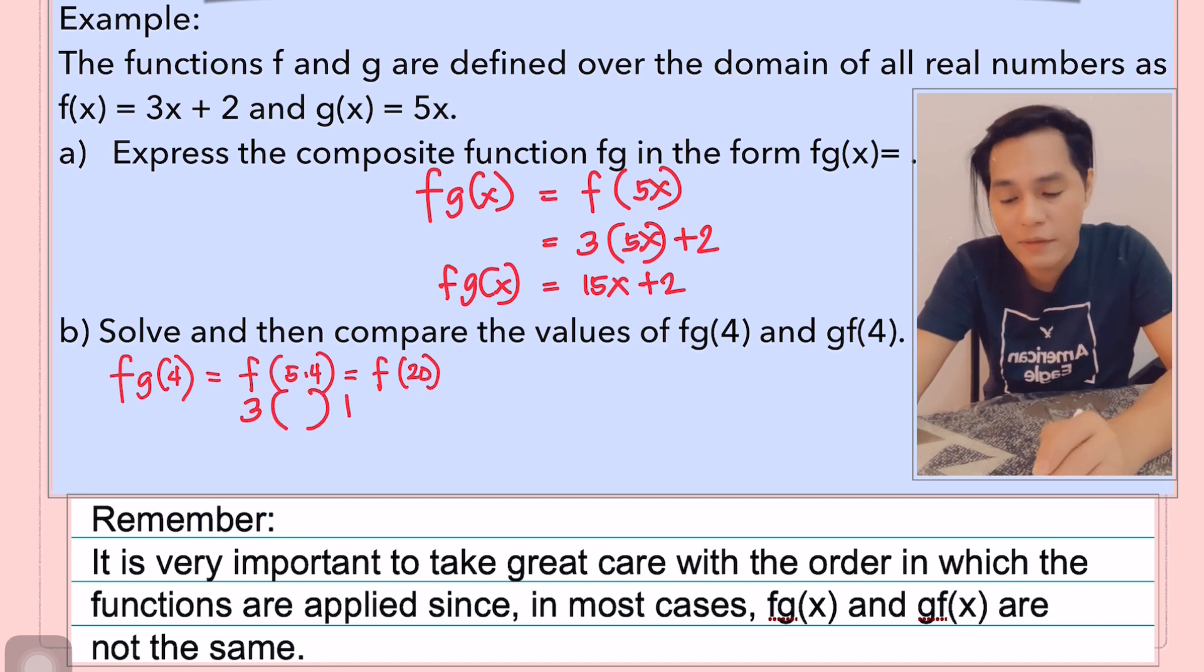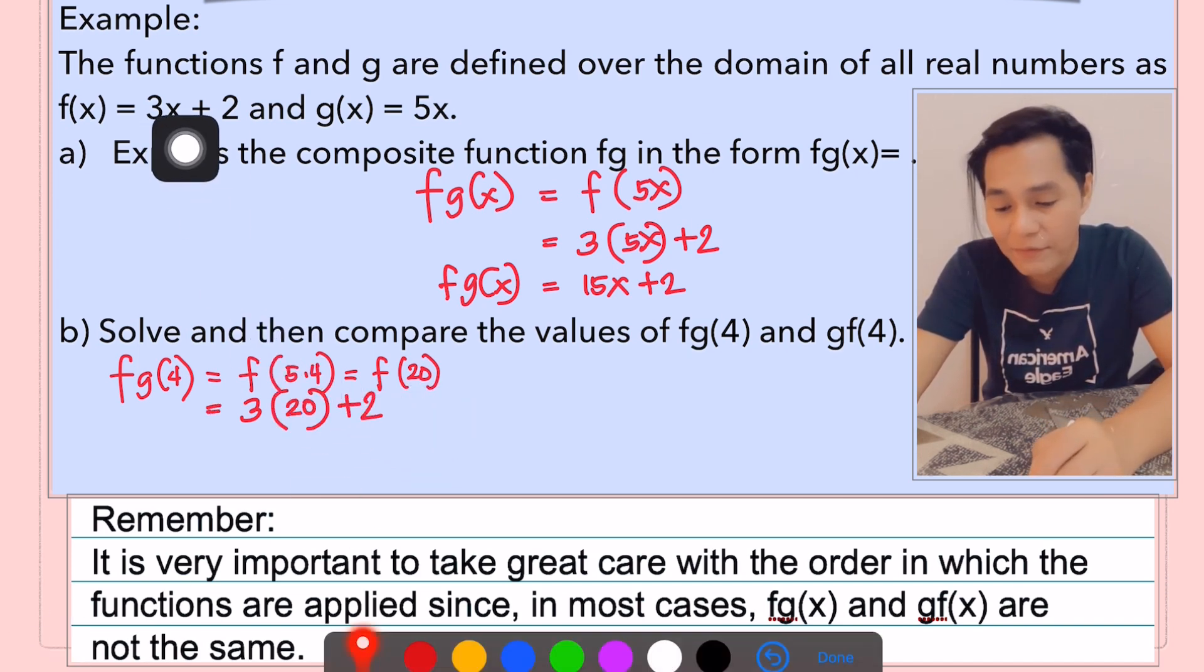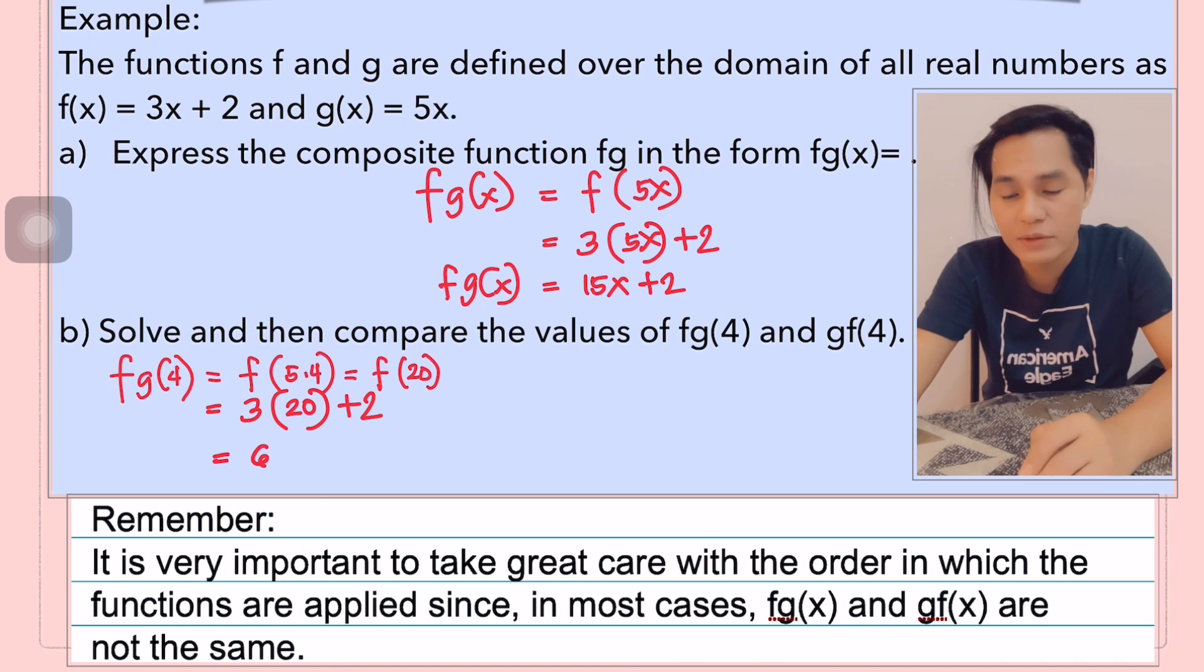Now, f of 20, meaning this 20 here, we are going to substitute to the function of f. f is 3x plus 2. That's why you have there 3 times 20 plus 2, which is equal to 62. So f of g of 4 is equal to 62.